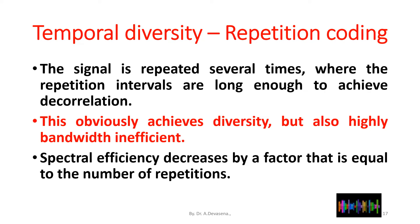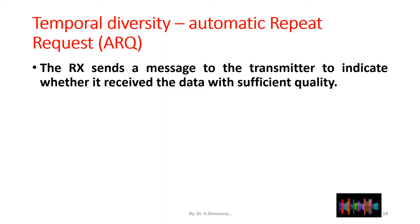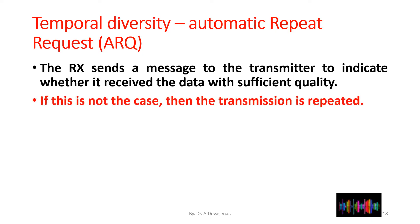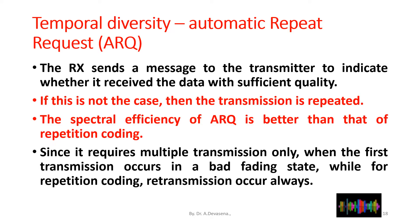Spectral efficiency decreases by a factor equal to the number of repetitions. The next temporal diversity technique is automatic repeat request (ARQ). The receiver sends a message to the transmitter to indicate whether it received the data with sufficient quality. If not, the transmission is repeated. The spectral efficiency of ARQ is better than that of repetition coding, since it requires multiple transmissions only when the first transmission occurs in a bad fading state, whereas for repetition coding retransmission occurs always.